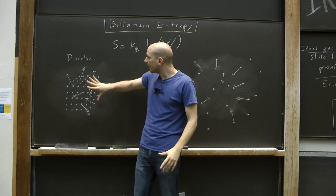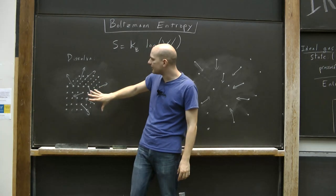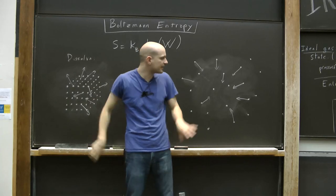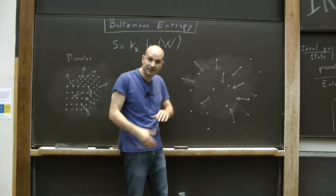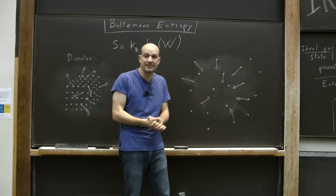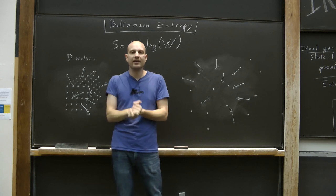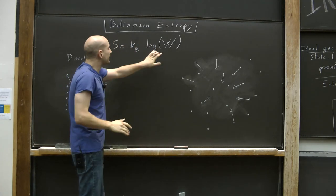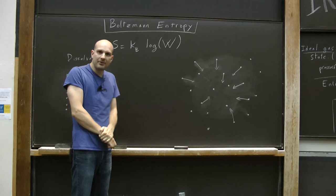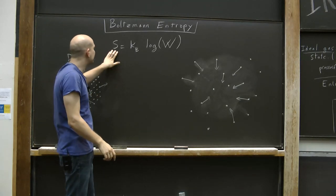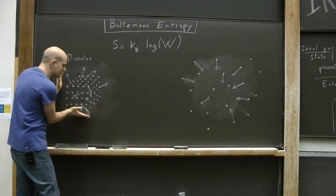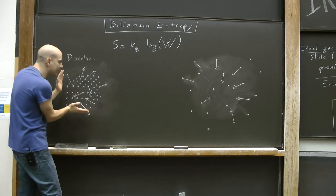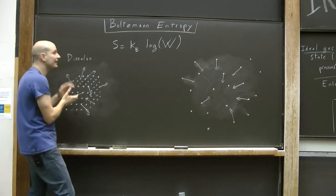So as I mentioned, things are irreversible because getting from few states - the sugar cube states - to many states - the dissolved states - is easy, but coming back is difficult. The entropy is an increasing function of W, which means that the entropy of a state such as the sugar cube state, in which there aren't very many possibilities that look like this state, that entropy is low.